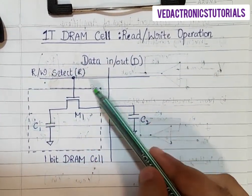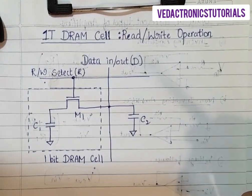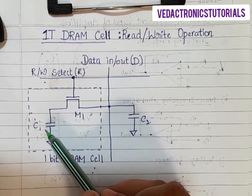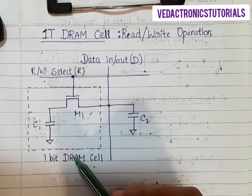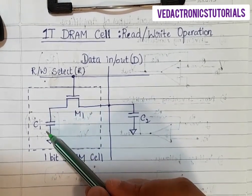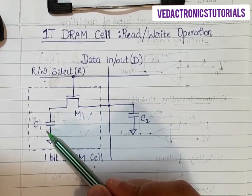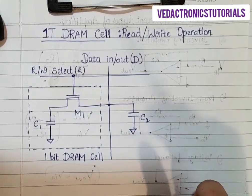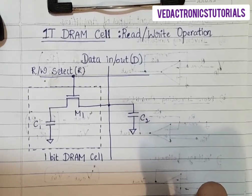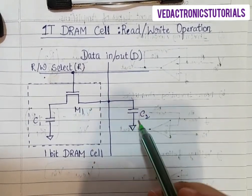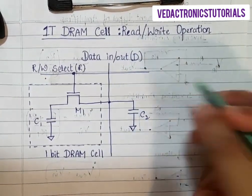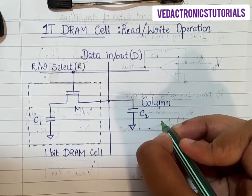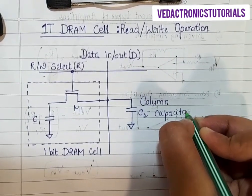This figure shows the 1T DRAM cell consisting of one explicit storage capacitor C1 and one access transistor. C1 typically has a value in the range of 30 to 100 femtofarads, and the binary data are stored as the presence or absence of charge in this storage capacitor. C2 represents the much larger parasitic column capacitance associated with the word line. The charge sharing between this larger capacitance and the very small storage capacitance plays a very important role in the operation of this 1T DRAM cell.